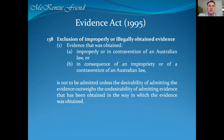Let's look at Section 138: Exclusion of improperly or illegally obtained evidence. Evidence that was obtained improperly or in contravention of Australian law, or in consequence of any impropriety or of a contravention of Australian law, is not to be admitted unless the desirability of admitting the evidence outweighs the undesirability of admitting evidence that has been obtained in the way in which the evidence was obtained. This is saying that if the court determines that recordings, surveillance, or evidence is improperly or illegally obtained, it cannot be admitted or will be set aside.